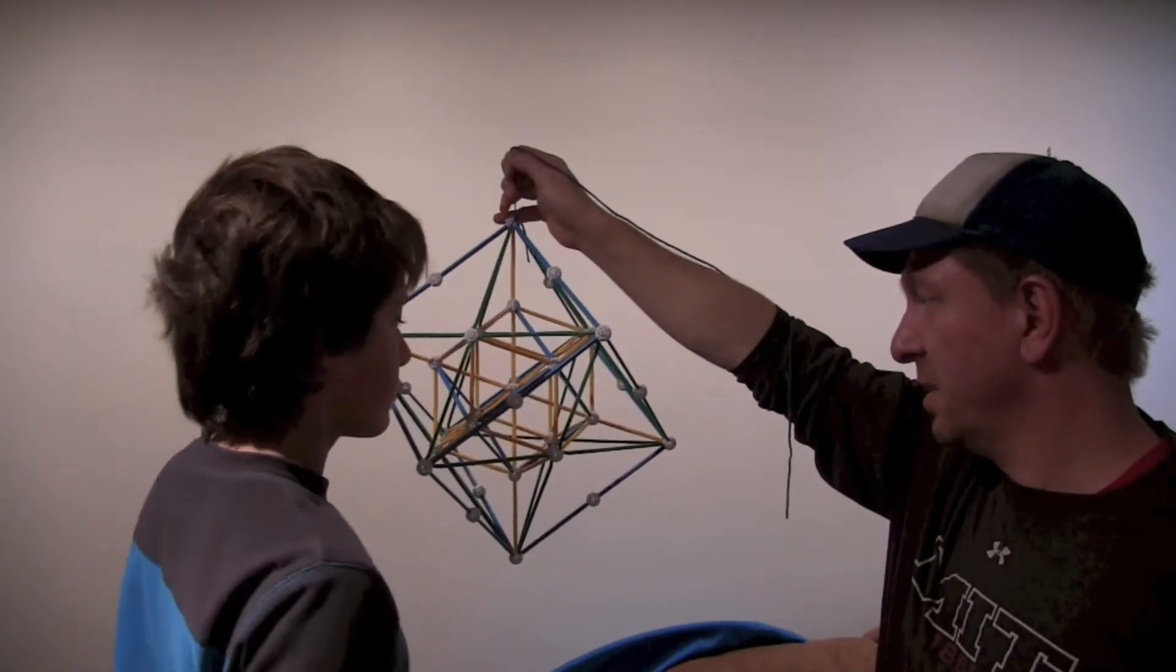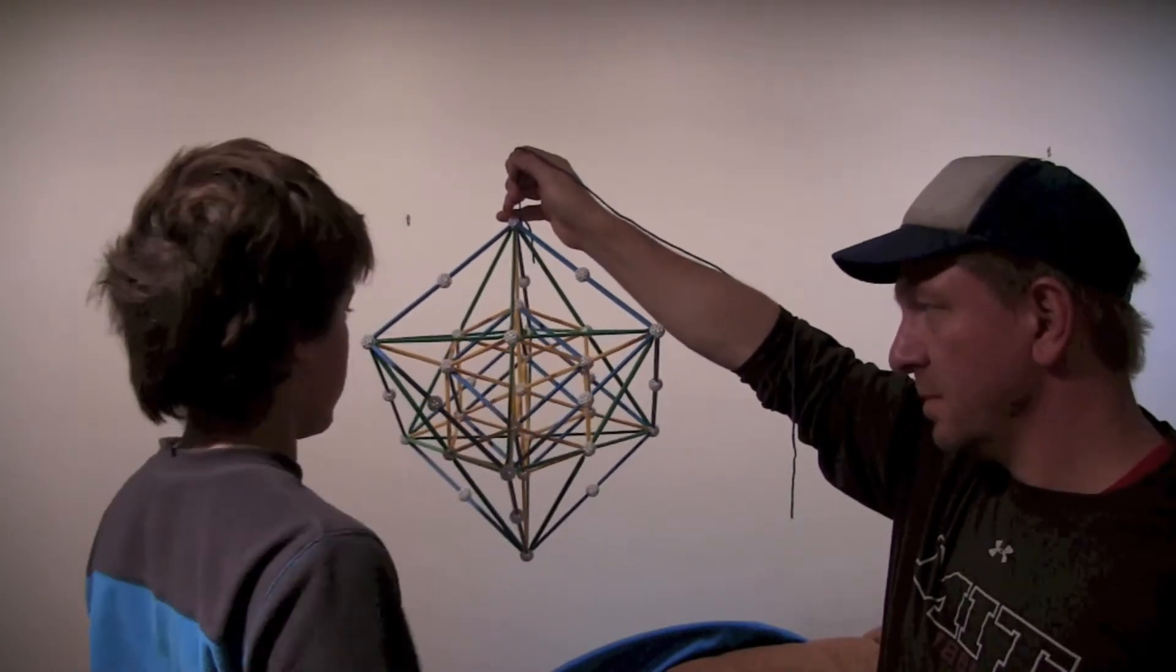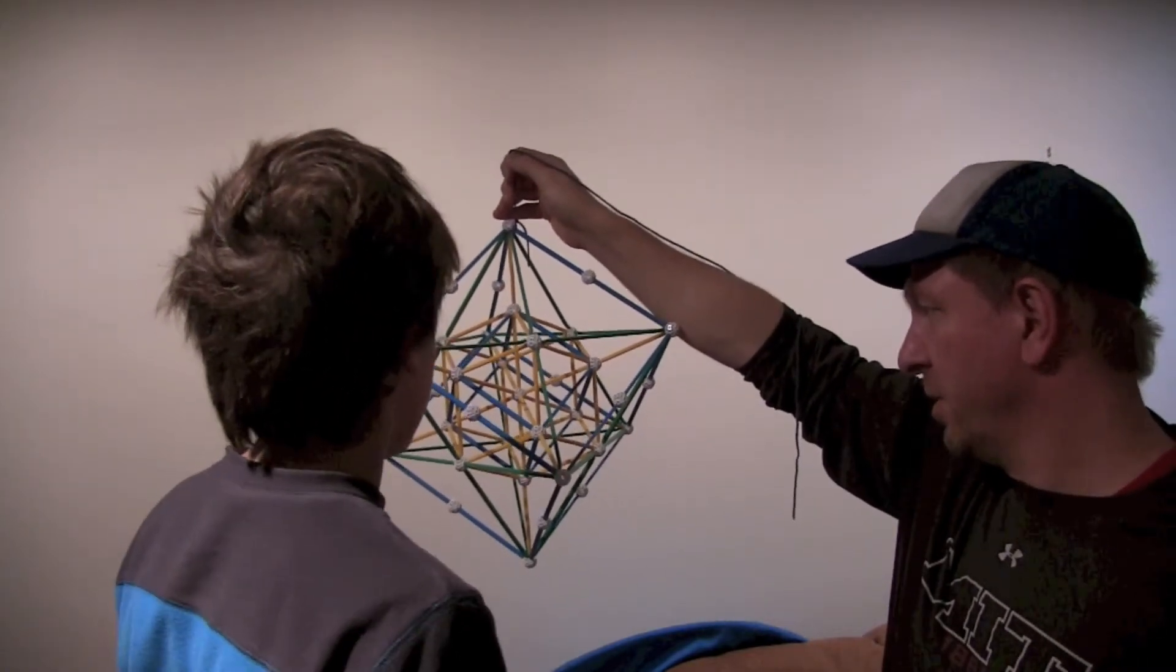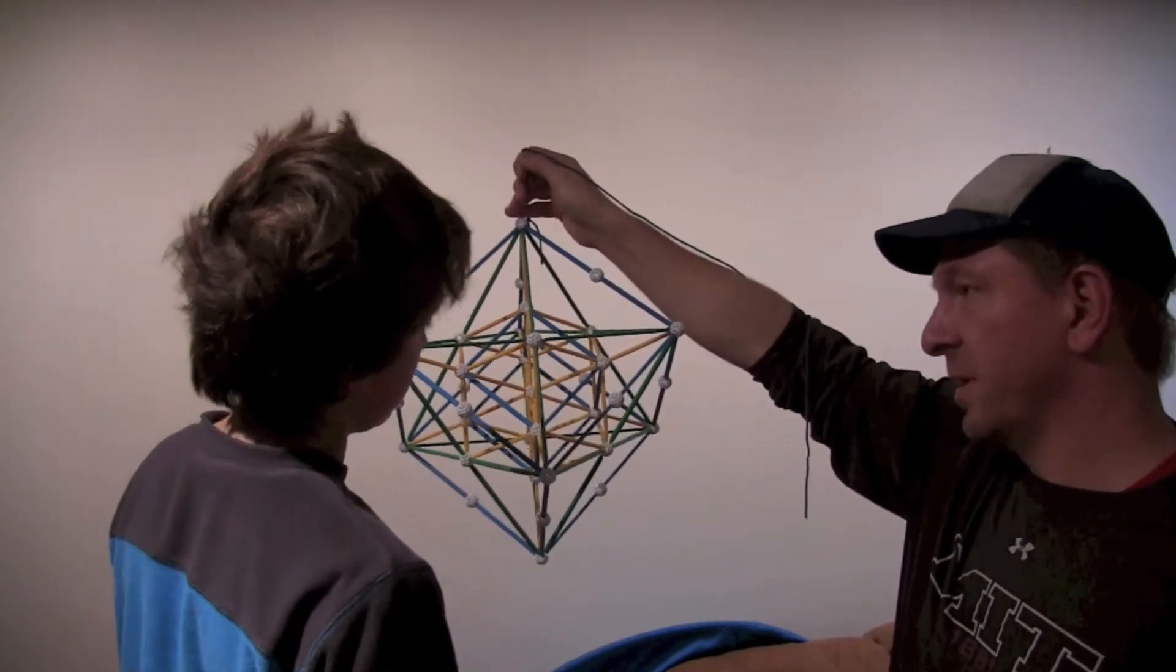So, our representation of this is not... It's a 3D shadow. It's a 3D shadow of it. So, there is going to be a little bit of warping. There are a couple regular, or almost regular, octahedrons.